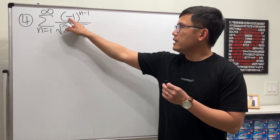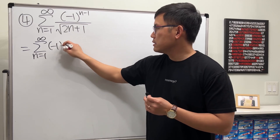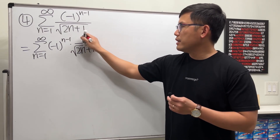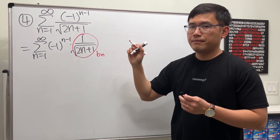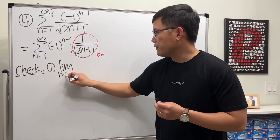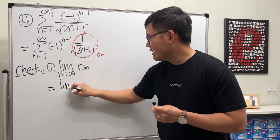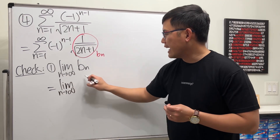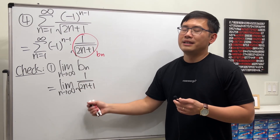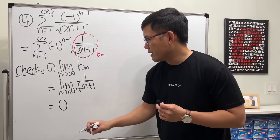Last question: we again have negative 1 to the n minus 1, so the bn is 1 over square root of (2n + 1). First check: the limit as n goes to infinity of 1 over √(2n+1). As n goes to infinity, 2 times infinity plus 1 is infinity, and the square root of infinity is still infinity. So 1 over infinity equals 0. Done.